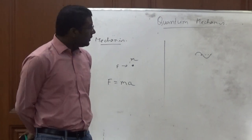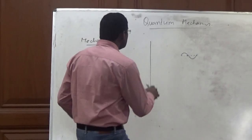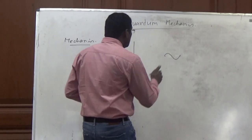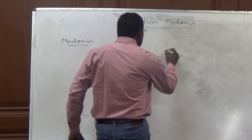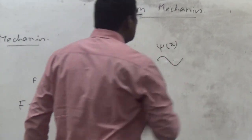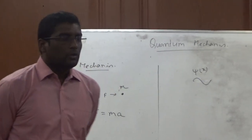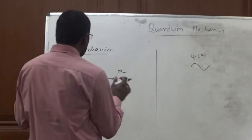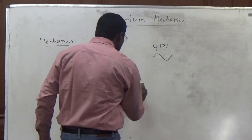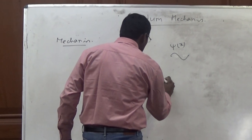So Schrödinger came out with the idea that instead of considering the particle, we can consider the wave — how this wave is varying in space.